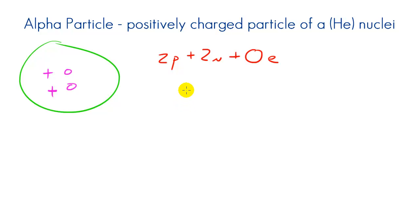So the formula for an alpha particle is two protons plus two neutrons plus zero electrons. Pretty weird, huh? Now typically, or I guess I might want to take a step back. So since you have two positive charges and no negative charges, you have an overall plus two or two plus charge. And whenever you have a positively charged ion, it's technically called a cation.